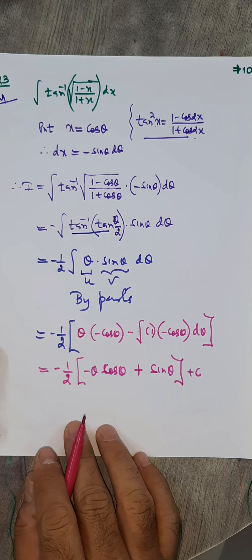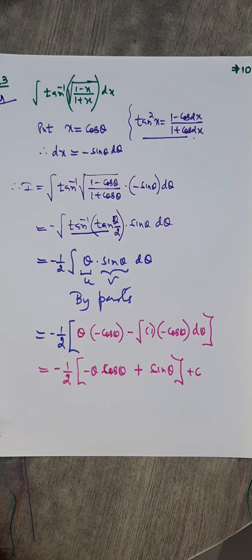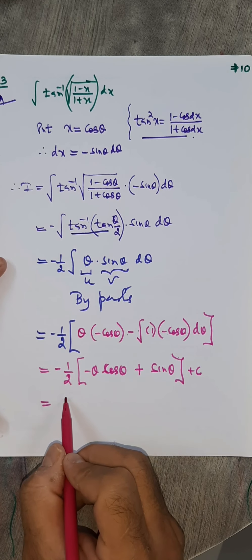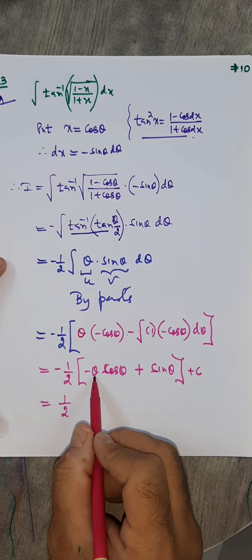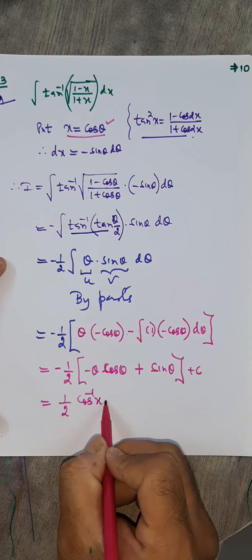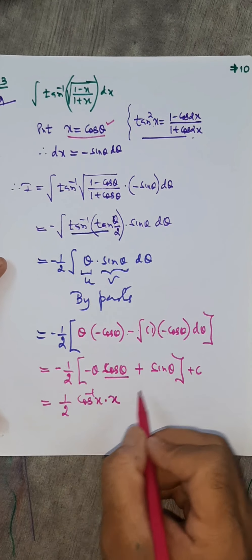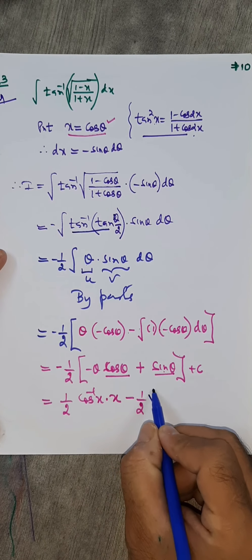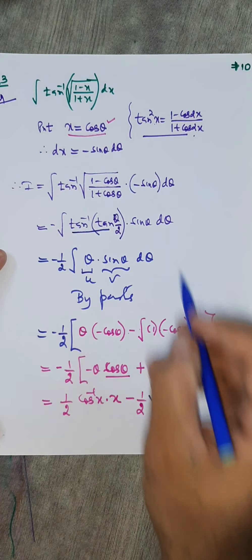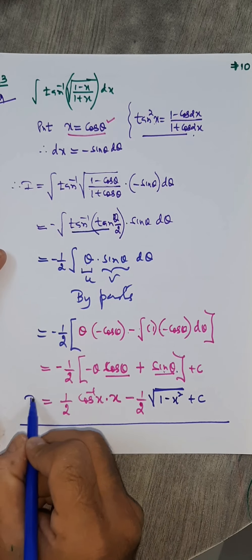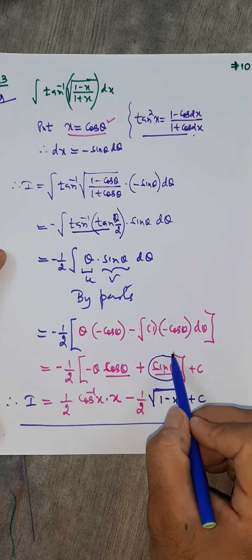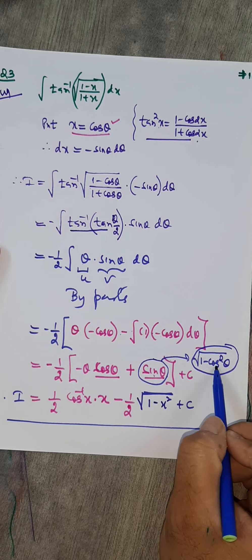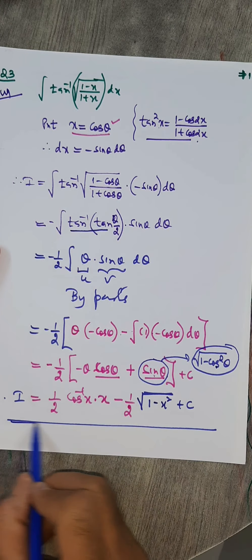Substituting back: θ = cos⁻¹x and cosθ = x and sinθ = √(1−x²). So the integral = −(1/2)[−cos⁻¹x · x + √(1−x²)] + c = (1/2)[x·cos⁻¹x − √(1−x²)] + c. This is the required integral for question 23.